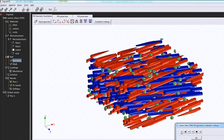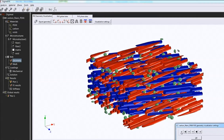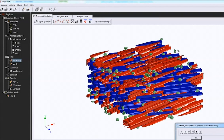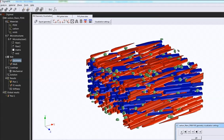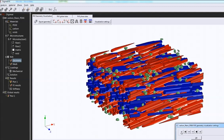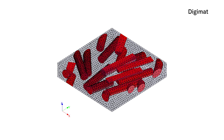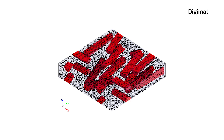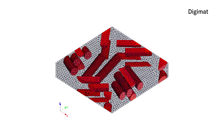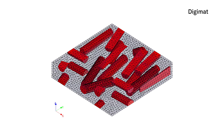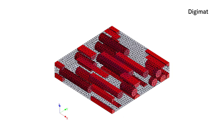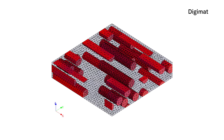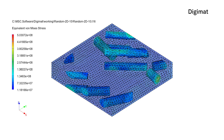We use Digimat software for micro-mechanical modeling of short fiber composites. We use two modules of this software — Digimat FP and Digimat MF — for predicting the mechanical behavior of short fiber composites.